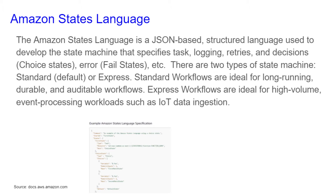The Amazon State Language is a JSON-based, structured language used to develop the state machine that specifies tasks, logging, retries, and decision choices, error, fail states, etc.